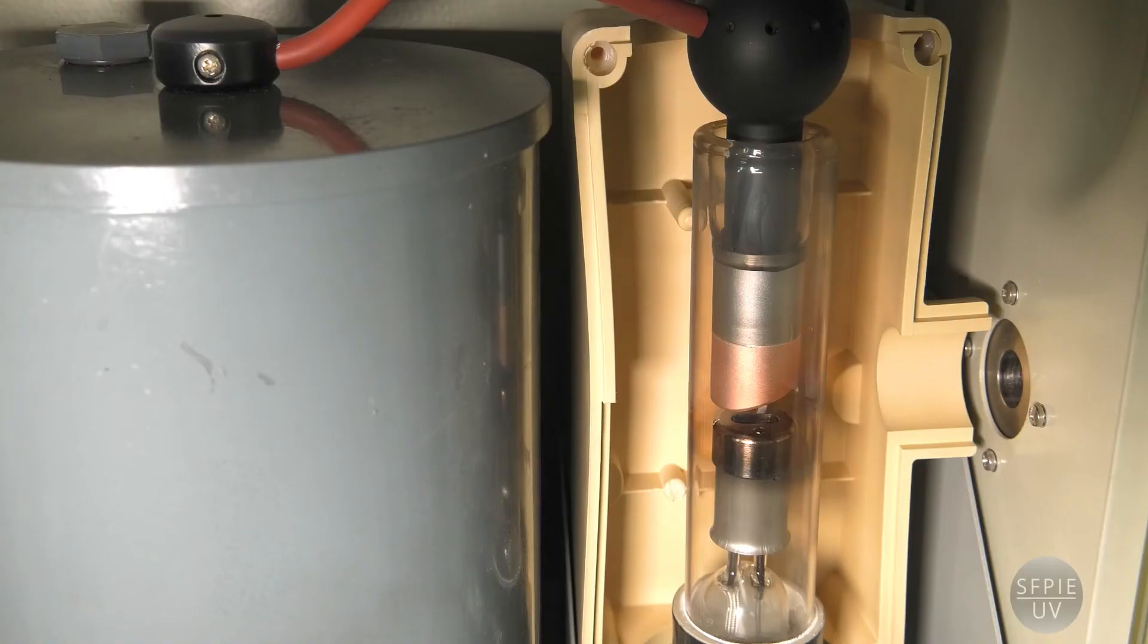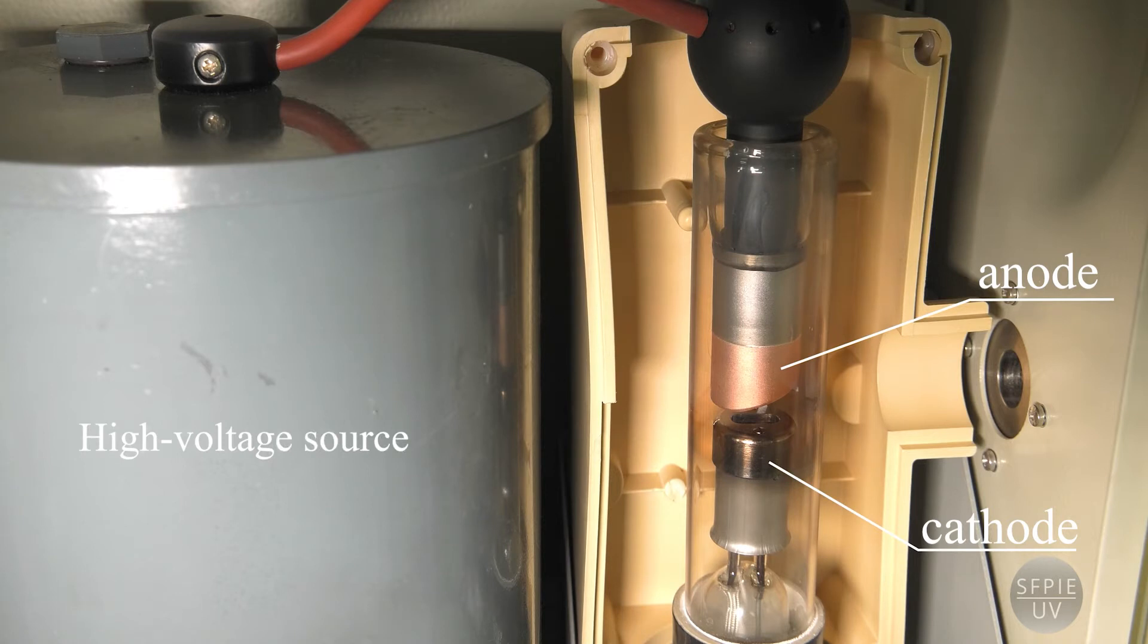Let us see how the experiment works. The electrons are accelerated from the cathode to the anode by a voltage between 20 and 40 kV. When stopped by the anode, the electrons emit electromagnetic radiation in the form of X-rays, some of which come out through this hole.